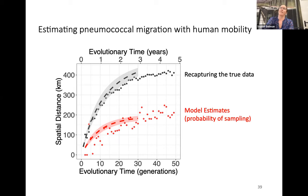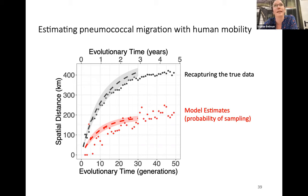We validated the method by simulating an epidemic. The black dots are the simulated epidemic. We downsampled this based on the probability of sampling in different provinces, then used the downsampled data to fit the model. In the red line, we recaptured our downsampled data. When we exclude the probability of sampling, we also recapture the true data. That makes us feel a lot better about this method working.